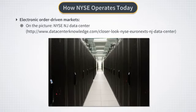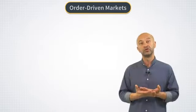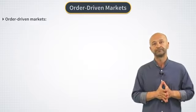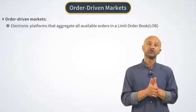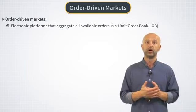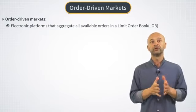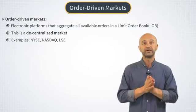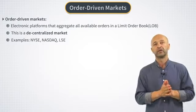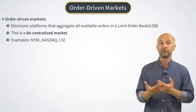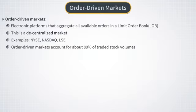Fast execution of market orders and availability of transaction data is one characteristic of modern markets with electronic execution, but it also changes the ways the market operates. Modern exchange-driven markets are so-called order-driven markets. Electronic platforms such as New York Stock Exchange or Nasdaq aggregate all available orders into a limit order book, or LOB for short. Such platforms are examples of decentralized markets — the market is no longer locked around one dealer. These days, order-driven markets amount to more than 80% of all traded stock volumes.